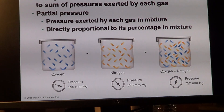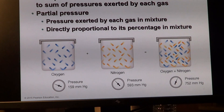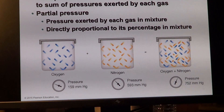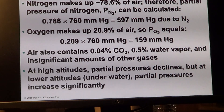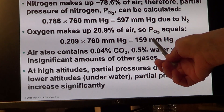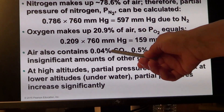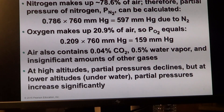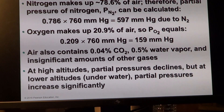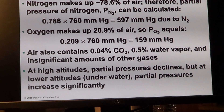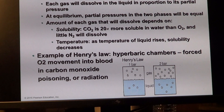Dalton's Law states that pressure of a gas mixture is derived from the sum of pressures created by each gas in the mixture. Since we're interested in oxygen and carbon dioxide, there is a huge difference between their pressures in inhaled air. By the law of diffusion, oxygen will diffuse from the air into the lung across the respiratory membrane.